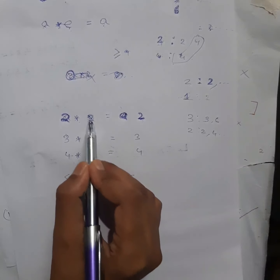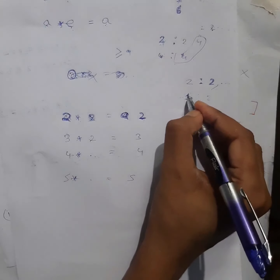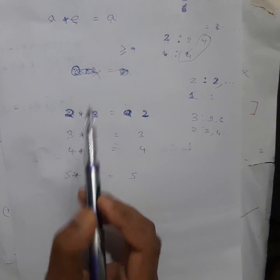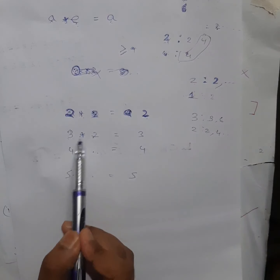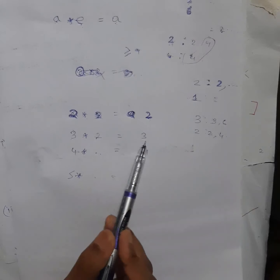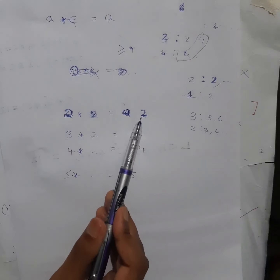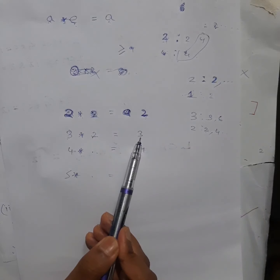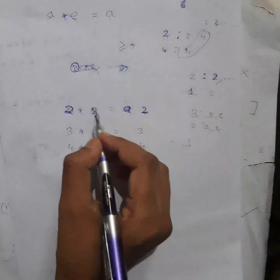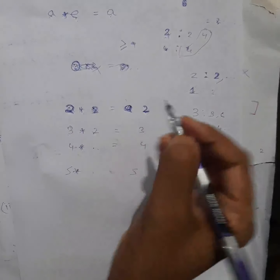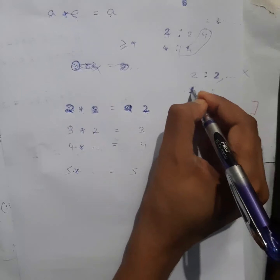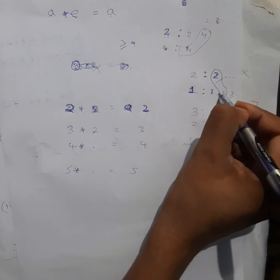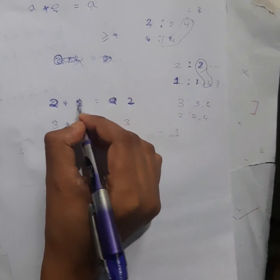To get identity output, I need some element that when used gives back the original. Only option now is 1 — less than 2. What are the multiples of 1? All numbers: 1, 2, 3, 4, 5 — all will come. So LCM of 2 and 1: lowest common multiple is 2 only. In this case I can get 2. So 1 might be the answer — let's check whether other elements also give the correct output.